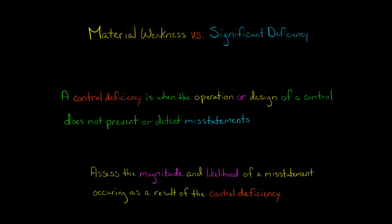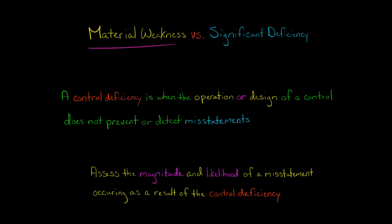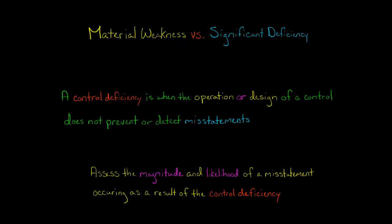In this video, we're going to discuss the difference between a material weakness and a significant deficiency in internal controls. First, understand that a material weakness and a significant deficiency are both types of control deficiencies. A control deficiency means there's something wrong with a control — maybe it wasn't designed right, or it doesn't exist, or it's not being applied correctly — so the control is not in a position to prevent or detect a misstatement in the financial statements.